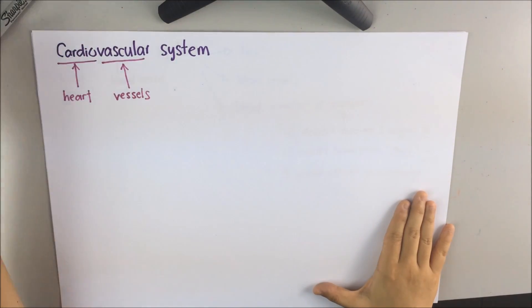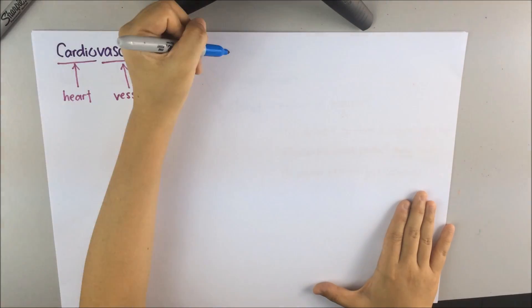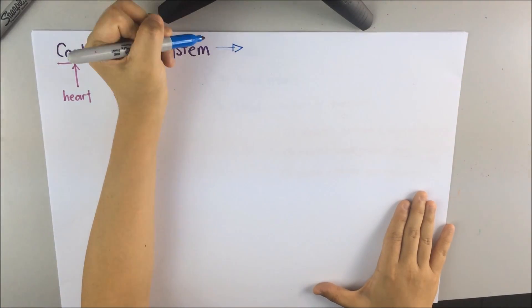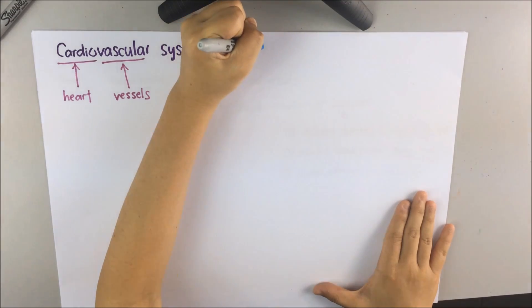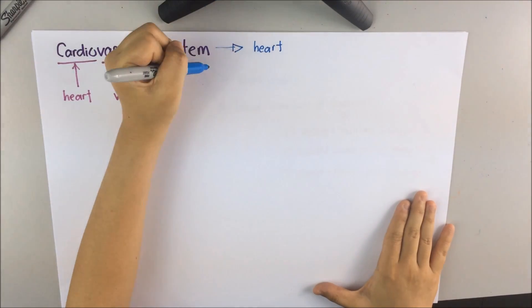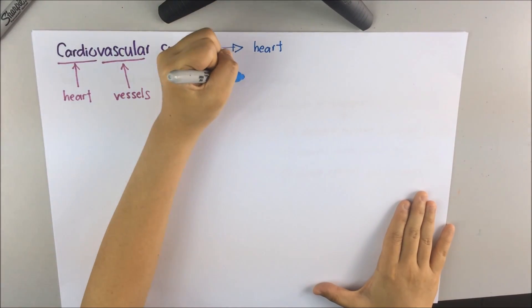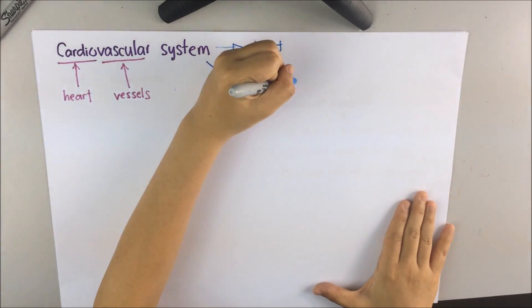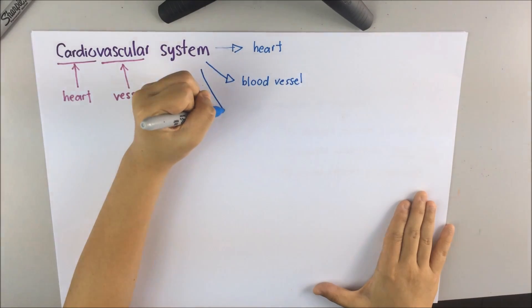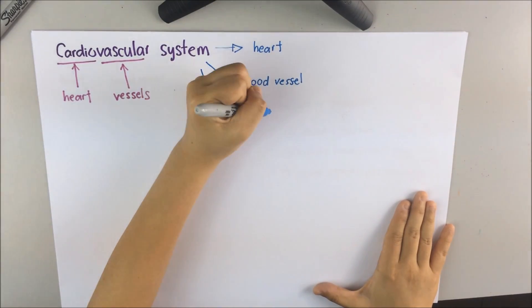The three major structures that make this possible are, firstly, heart, which acts as a muscular pump to pump the blood around the body. Secondly, blood vessels. These are the interconnecting tubes to deliver blood to all body tissue. And thirdly, blood, which acts as a medium of transport.